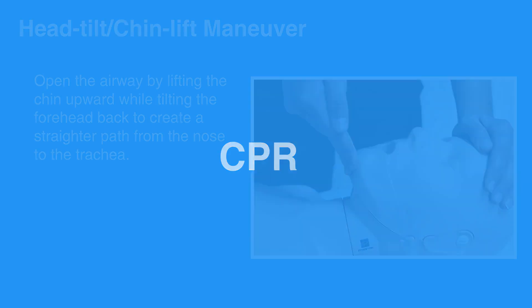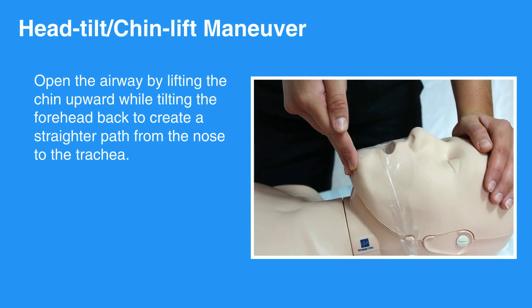The airway rarely remains open in an unconscious individual without any external support. Therefore, you have to open the airway by lifting the chin upward while tilting the forehead back. This is known as the Head-Tilt-Chin Lift Maneuver. The goal is to create a straighter path from the nose to the trachea.